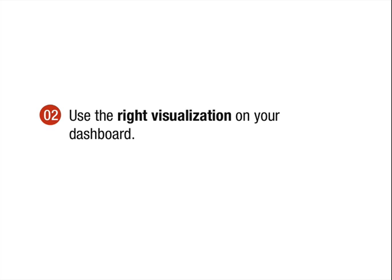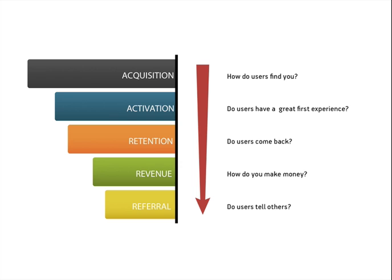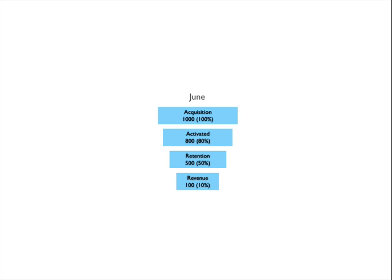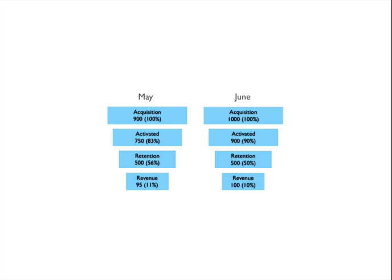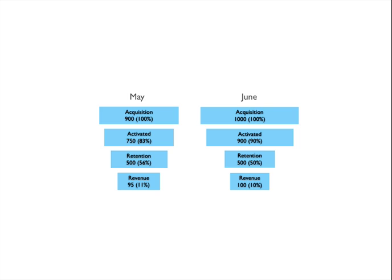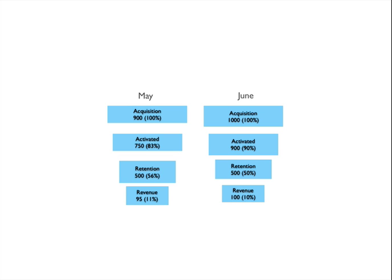The next step is using the right kind of visualization. The Pirate Metrics model is essentially a conversion funnel, and it's natural to want to use a funnel chart because it's simple, visual, and pretty popular. But the funnel chart is actually a poor visualization for communicating progress. The problem arises when you put two funnel charts next to each other — can you tell me which is better? Can you tell me if the product was better in June or in May? The funnel visualization itself doesn't answer this question, and you end up having to compare all the numbers. We could try making the funnel fatter or taller to represent size, but that only makes the chart even harder to read because the elements are no longer aligned.